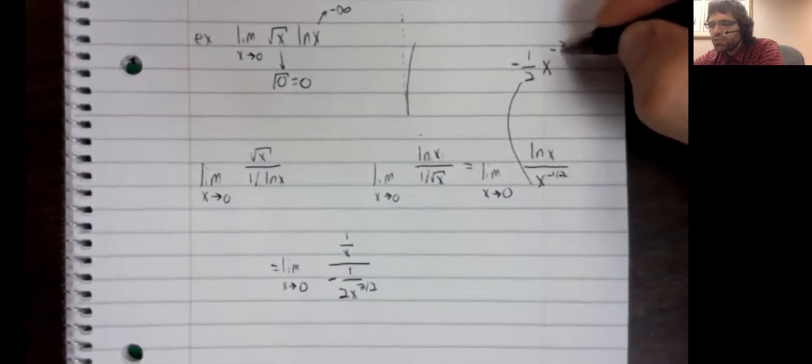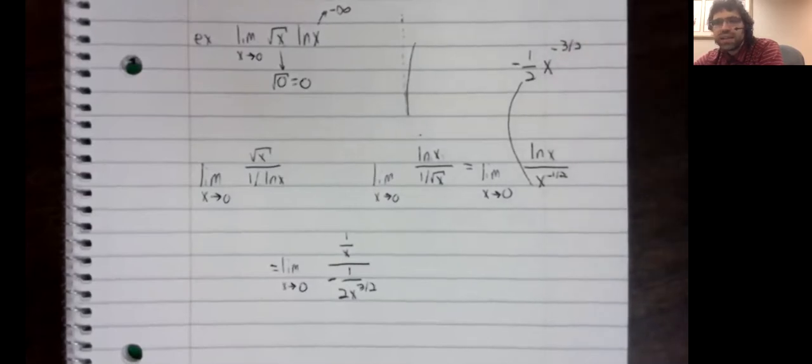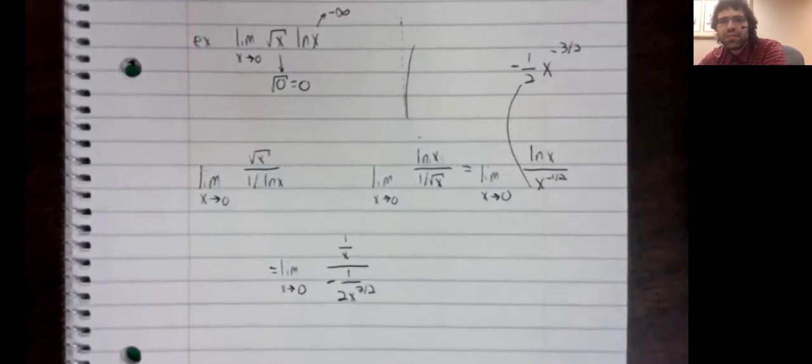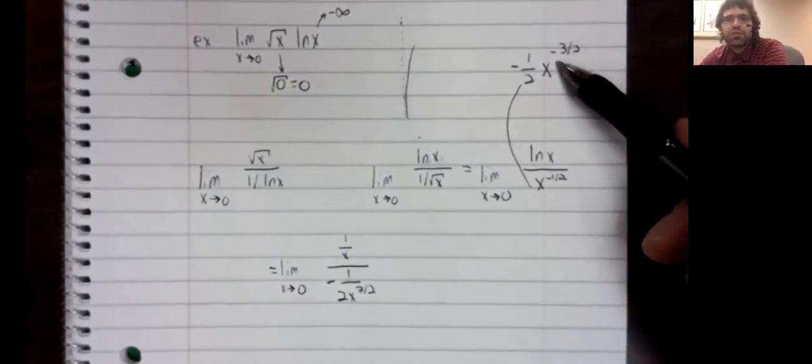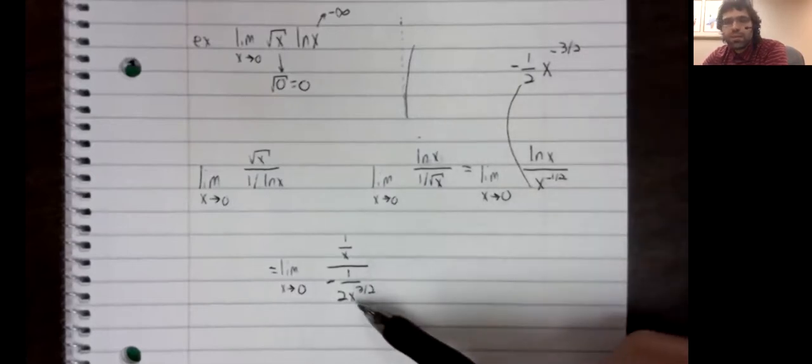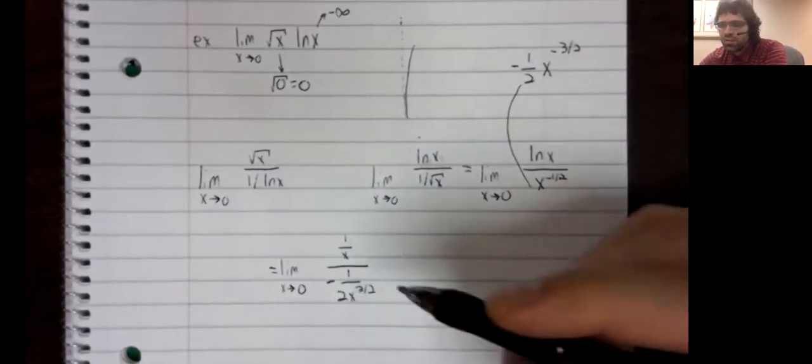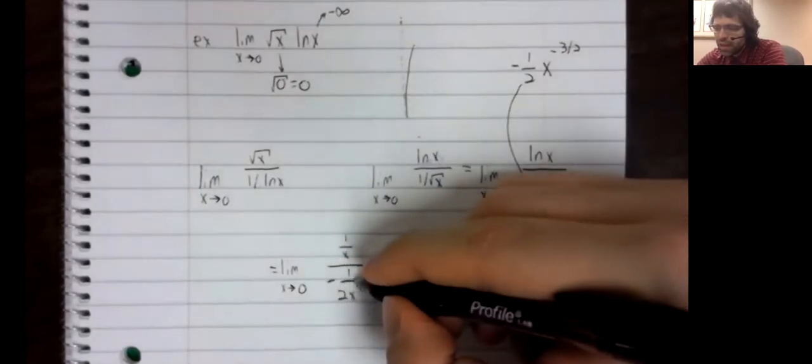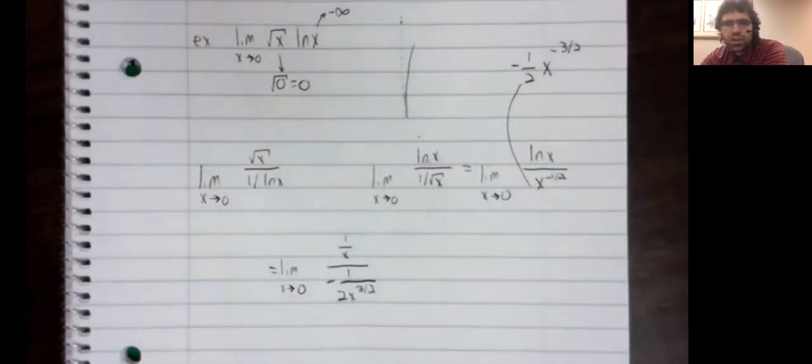We subtract one, we get negative three halves. And you see I rewrote this negative exponential by putting x to the positive three halves in the denominator.